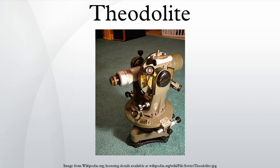Triangulation, as invented by Gemma Frisius around 1533, consists of making direction plots of the surrounding landscape from two separate standpoints. The two graphing papers are superimposed, providing a scale model of the landscape, or rather the targets in it. The true scale can be obtained by measuring one distance both in the real terrain and in the graphical representation. Modern triangulation, as for example practiced by Snellius, is the same procedure executed by numerical means.